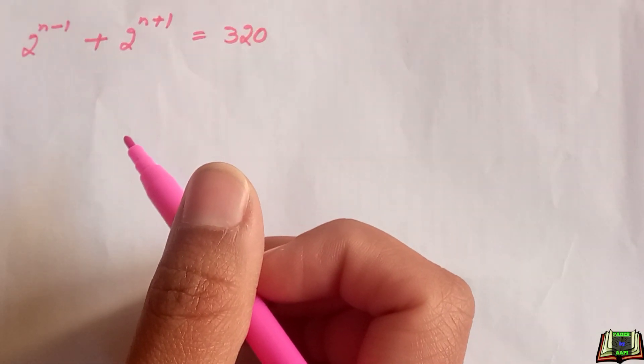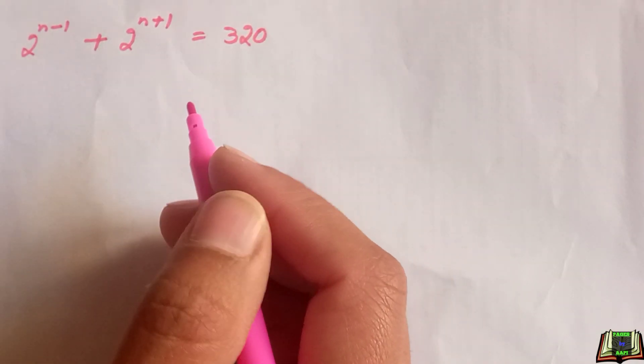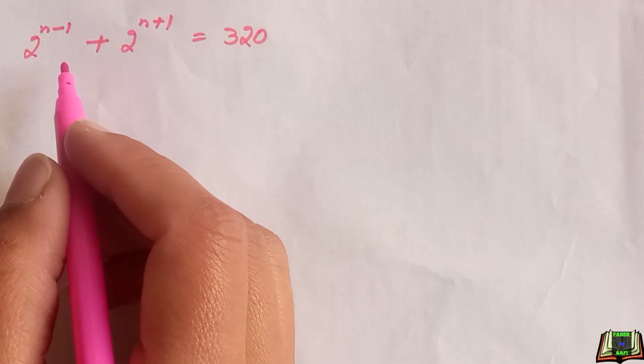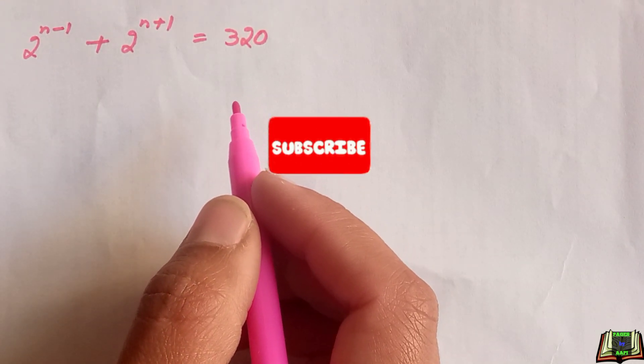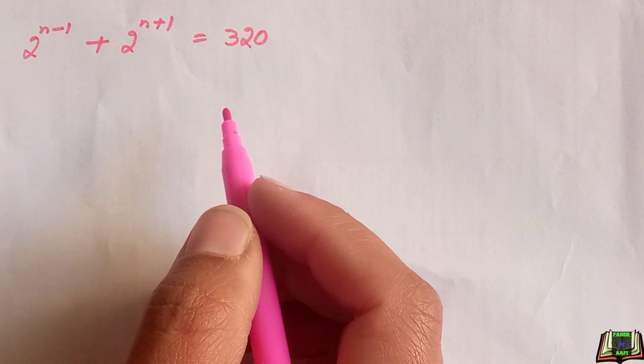Welcome you all to a very nice exponential equation. If 2 raised to power n minus 1 plus 2 raised to power n plus 1 is equal to 320, then what will be the value of n? Let's find out and see the solution.